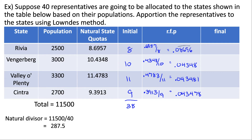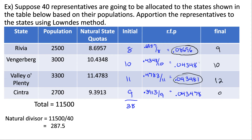For the final allocation, we need to find which two states have the largest relative fractional parts. The largest is 0.08696, so that state goes from 8 seats to 9 seats. For the next largest, we compare 0.043481 and 0.043478 — the larger one is 0.043481, so that state goes from 11 seats to 12 seats. The others stay at 10 and 9 respectively. All of this adds up to 40, which is the correct house size.